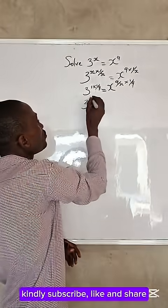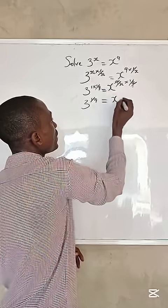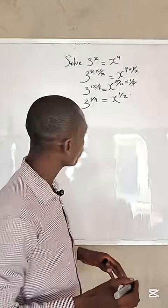From here, we have 3 raised to the power of 1 over 9 equals, 9 would cancel 9, x raised to the power of 1 over x.